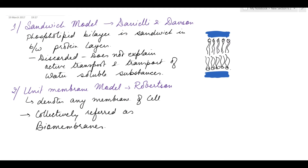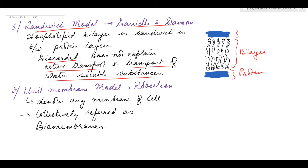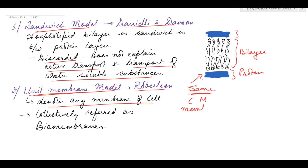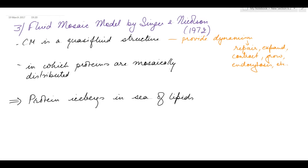The earlier model used to explain the structure of the cell membrane is the sandwich model, given by Danley and Davson. According to this model, a phospholipid bilayer is present which is sandwiched between two protein layers. This model has been discarded as it does not explain active transport and transport of water-soluble substances. Next is the unit membrane model, given by Robertson, which is same in structure as the sandwich model. The term unit membrane denotes any membrane present in the cell, including the cell membrane and membranes in the organelles, collectively referred to as biomembranes.